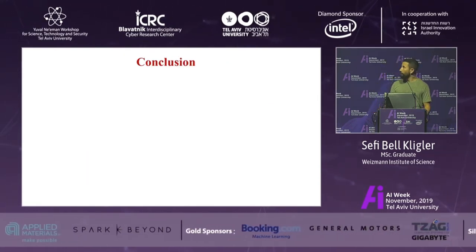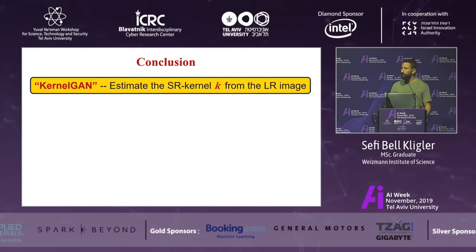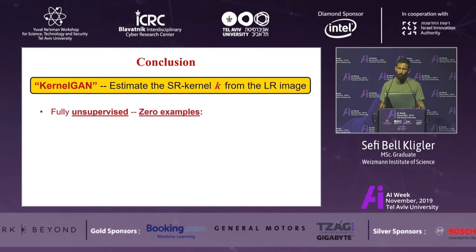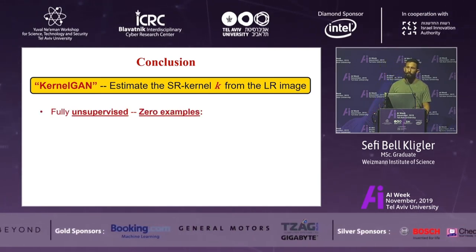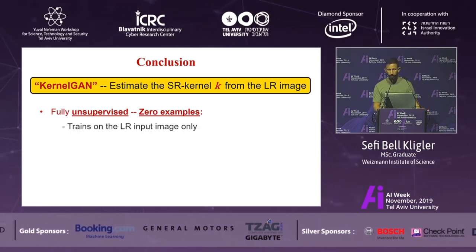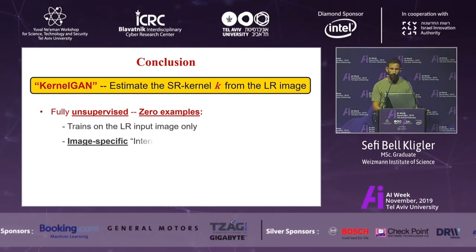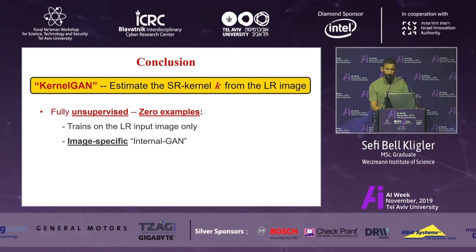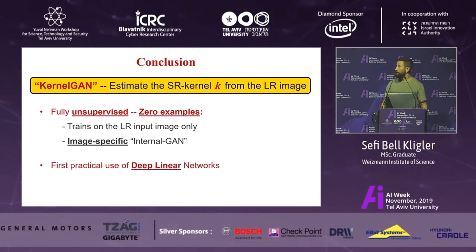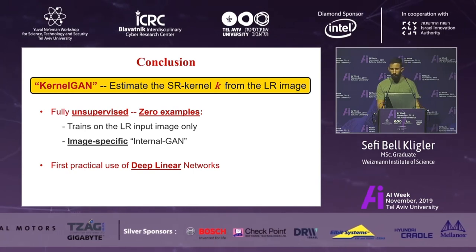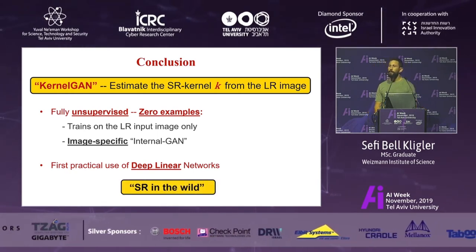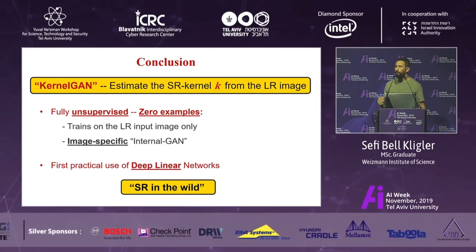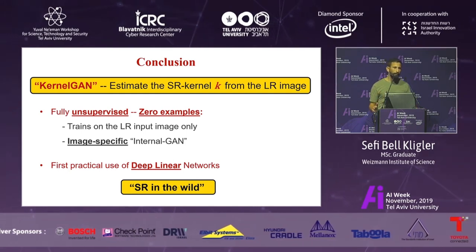To conclude: we introduced KernelGAN, which estimates the super-resolution kernel given only the input image, in a fully unsupervised way using no other examples than the image itself. It trains only on the input image, producing an image-specific internal GAN, and to the best of our knowledge represents the first practical use of deep linear networks. Most importantly, we take a large step forward towards super-resolution in the wild — super-resolution to any given image without any prior knowledge or assumptions.